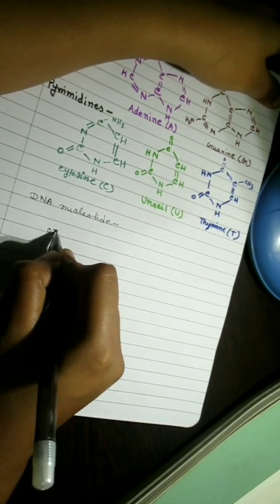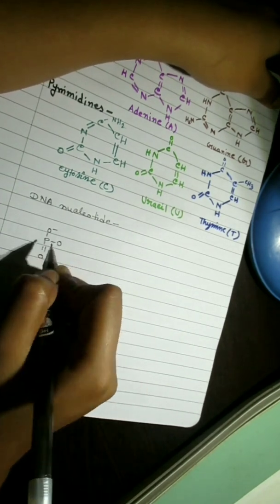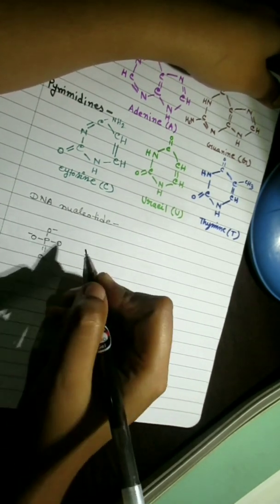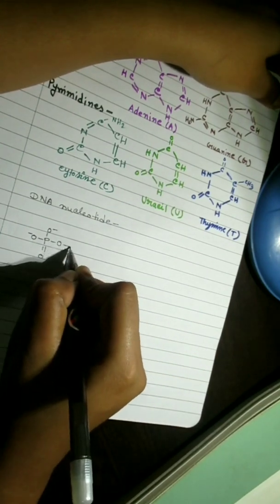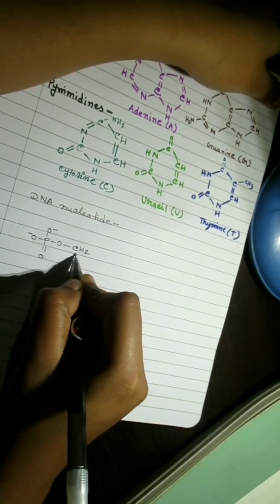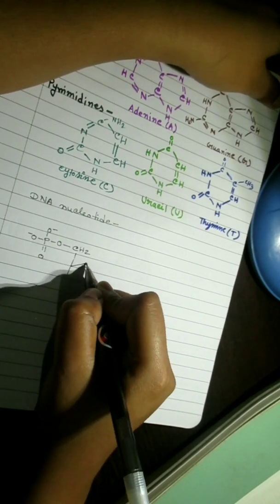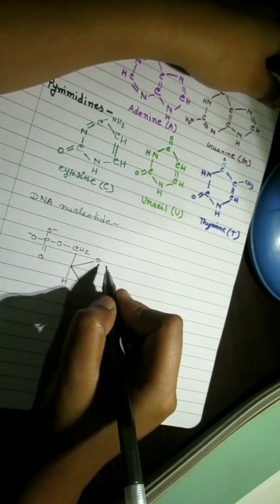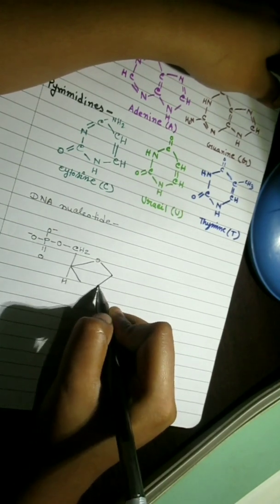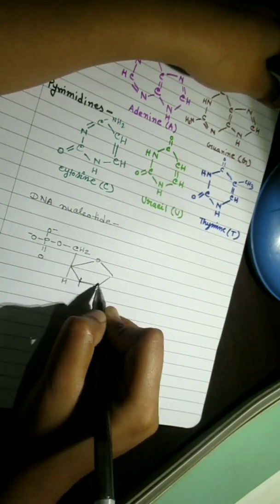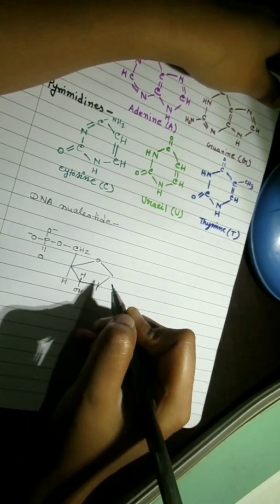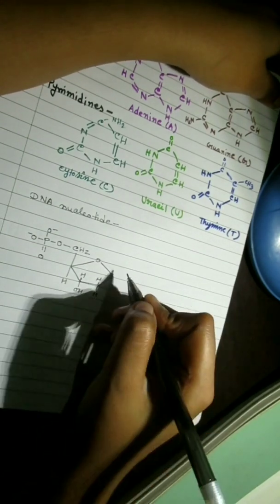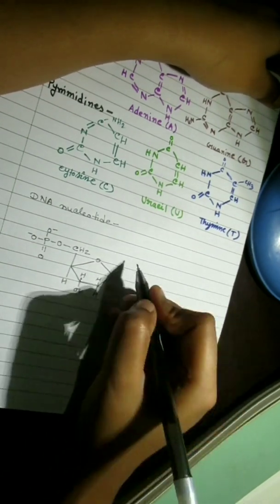Combination of sugar and base is called nucleoside. Addition of phosphate group to a nucleoside yields a nucleoside phosphate, which is one kind of nucleotide. This is called deoxyribose-adenosine 5' monophosphate, because there is only one phosphate.